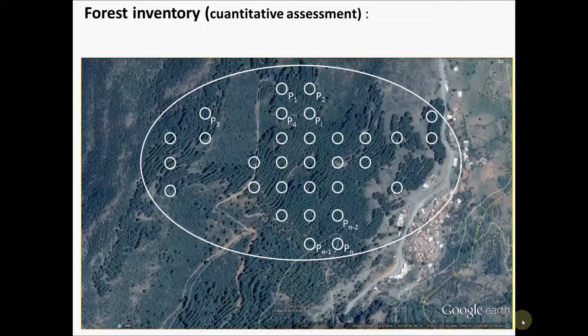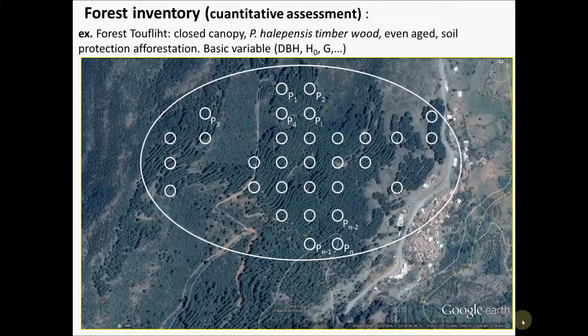If in some stands a timber cruise is needed — for example in this case in the forest of the Atlas — stands that could be thinned in order to achieve more resilient and more complex forest structures, a forest inventory would be needed. For example, we are talking about closed canopy Pinus halepensis timber woods, even-aged.